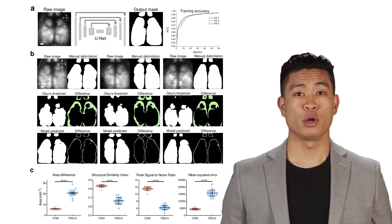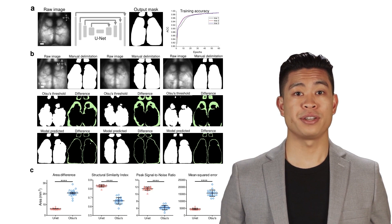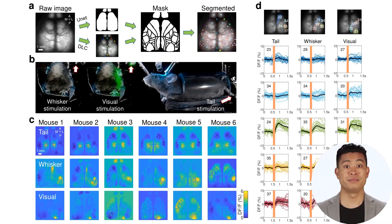We also developed an adapted UNET network to delimit the boundaries of the cortex. We showed that the UNET model offers higher accuracy for cortical delimitation prediction compared to the conventional threshold method when both were compared to the human rater's manual delimitation.